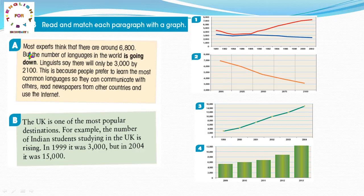Paragraph A: Most experts think that there are around 6,800 languages. But the number of languages in the world is going down quickly. طبعاً هنا يحكي عن اللغات. Linguists say there will only be 3,000 by 2100. This is because people prefer to learn the most common languages so they can communicate with others.